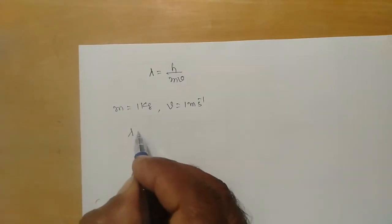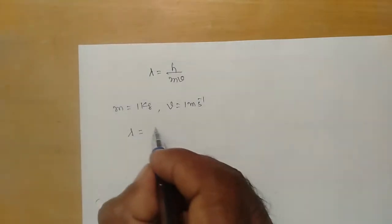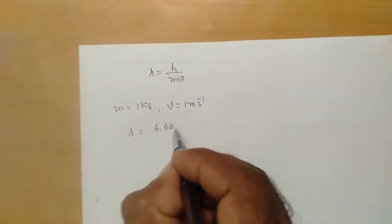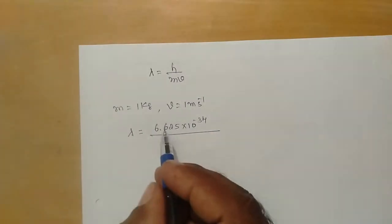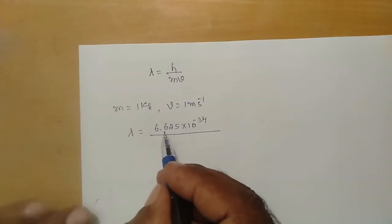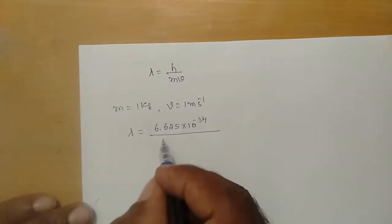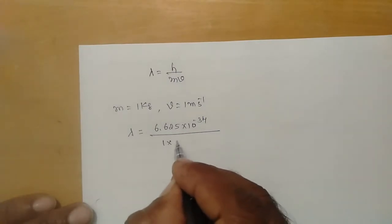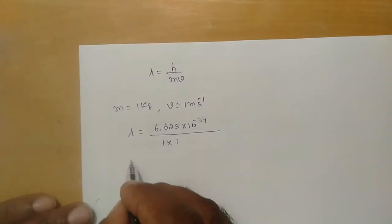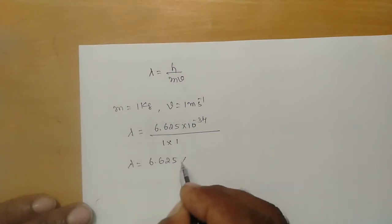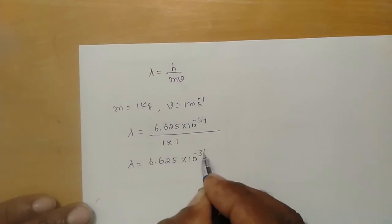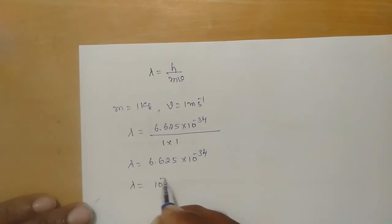if I calculate the de Broglie wavelength associated with this material particle in motion, using Planck's constant 6.625 × 10^-34, mass 1 kg, and velocity 1 m/s, lambda is approximately 6.625 × 10^-34 meters. So the order of the wavelength is 10^-34 meters, which is very, very small.